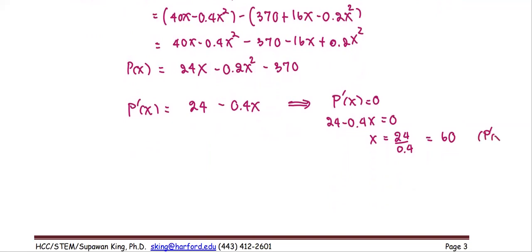This one, P prime equals 0, and we're going to use this x to determine the interval of increase and decrease. So if 60 is right there, starting from 0 and stopping at 100 as the interval of x, we determine the sign of P prime.